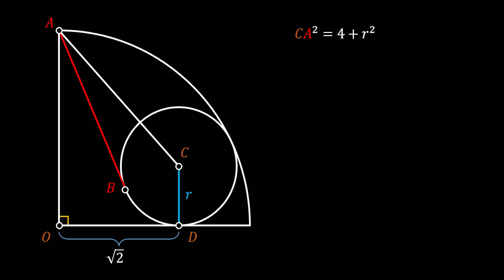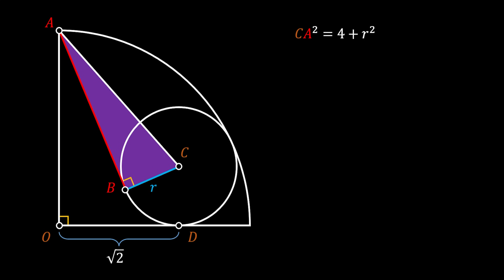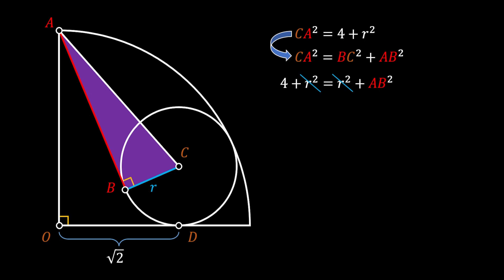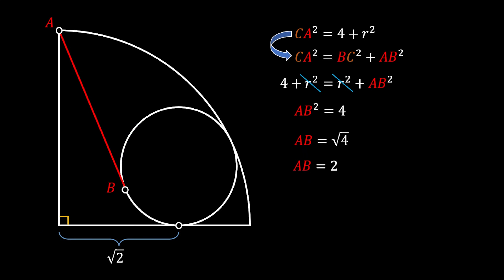Now let's head back to our sketch. We rotate the radius of our smaller circle to point B. Using the tangent-of-a-circle theorem again, the angle at point B must be a right angle since AB is a tangent line of the inscribed circle. Looking at right triangle ABC and applying the Pythagorean theorem, CA squared equals BC squared plus AB squared. Substituting our value of CA squared, we can cancel r squared from both sides of the equation and get that AB squared equals 4, meaning AB equals the square root of 4, so the tangent line AB equals 2.